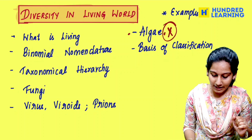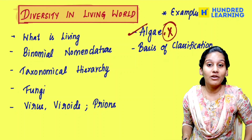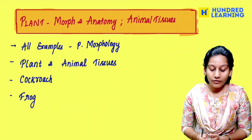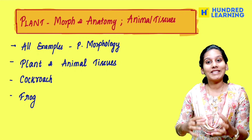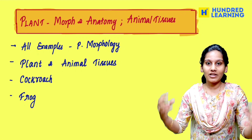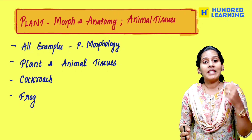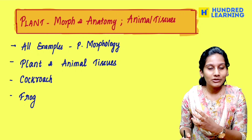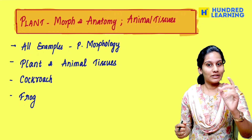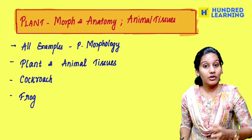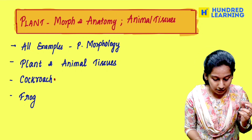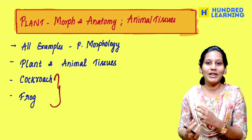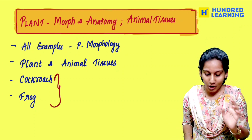Repeated questions — algae is the basis of classification. And next, plant morphology and anatomy is a structural organization — complete plants and animals. We will focus on all examples. You will follow Bio 360 — very important issues. Cockroach and frog are super important, so you will find a quick recall and short video.